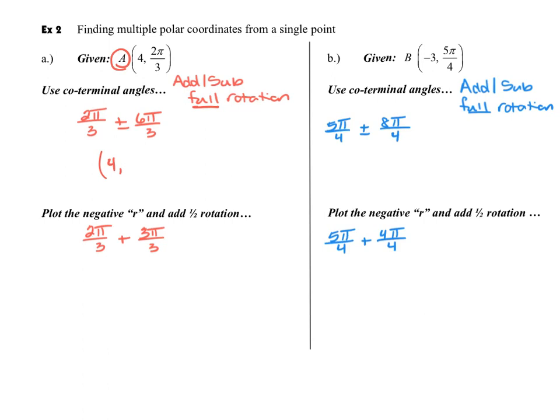So we're going to keep that same R value. And then I'm going to add and subtract the full rotation to the original two pi over three. So I'm going to get a four comma eight pi over three.